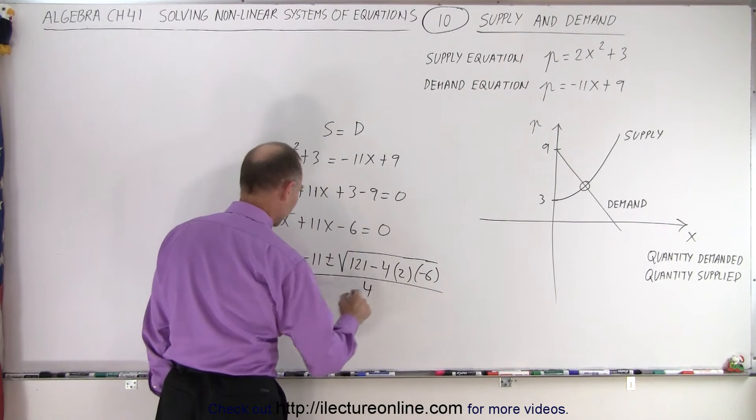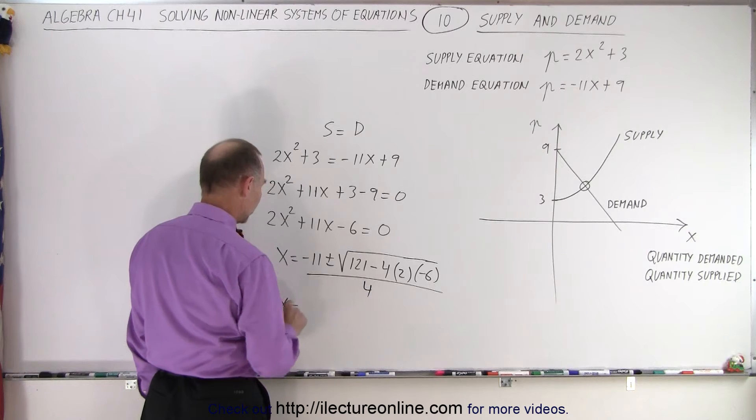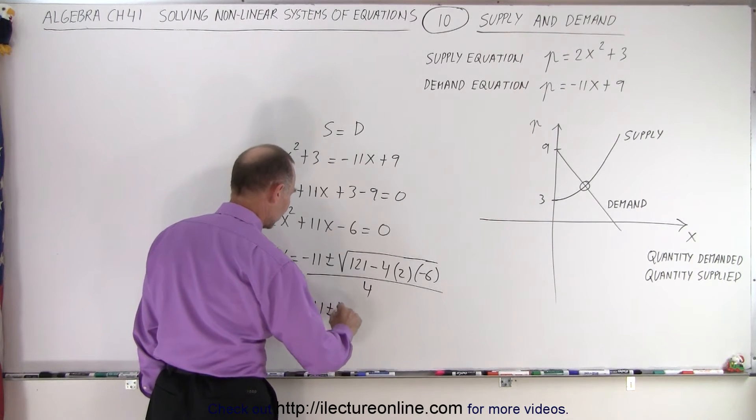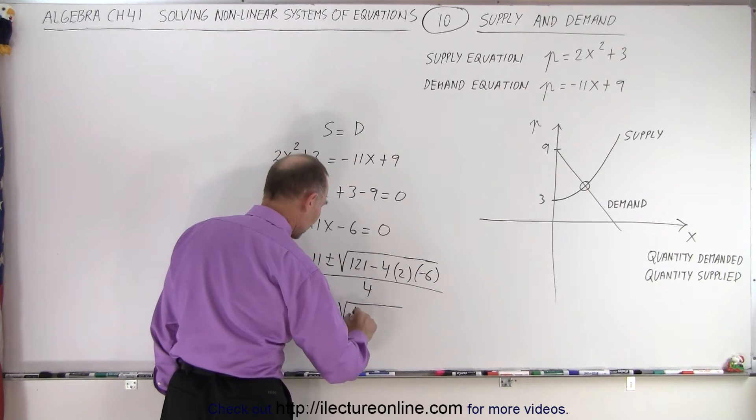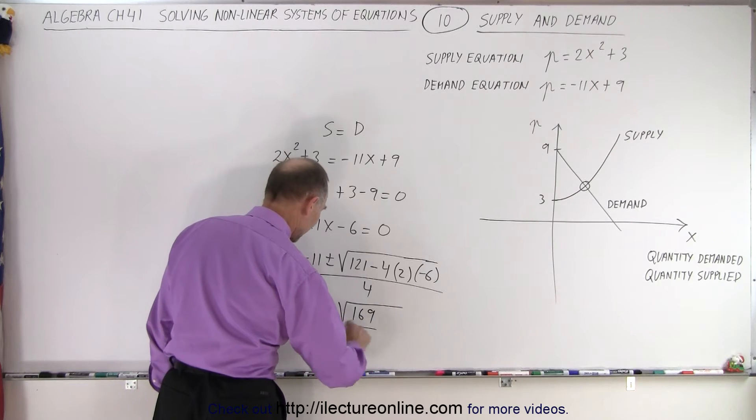And 2A would be 4. So X equals minus 11 plus or minus the square root of, so this is 24 plus 4, that's 48, plus this gives me 169. Divide it by 4.